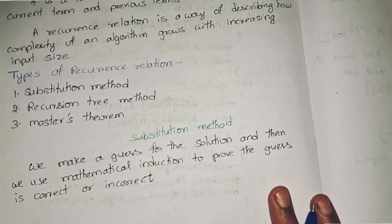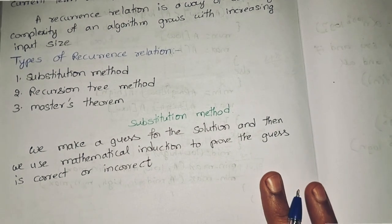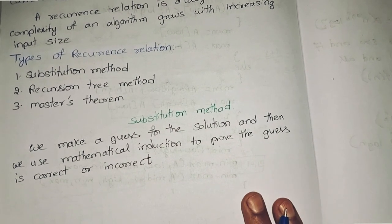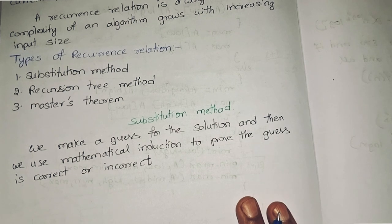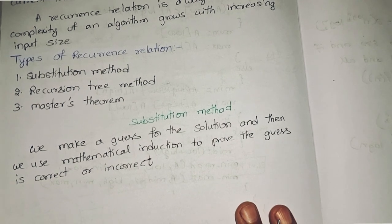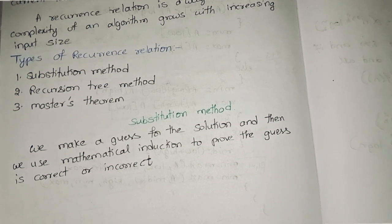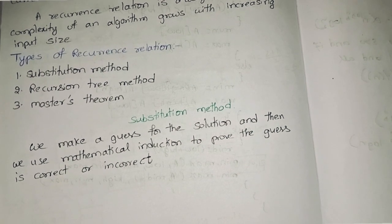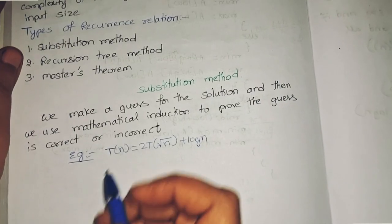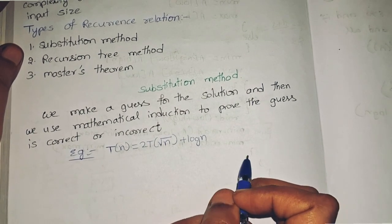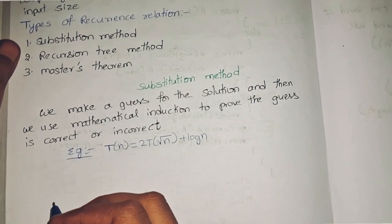In the substitution method, we simply make a guess for the solution and then we use mathematical induction to prove the guess is correct or incorrect. Let us consider an example here. This is the example: T(n) = 2T(√n) + log n.